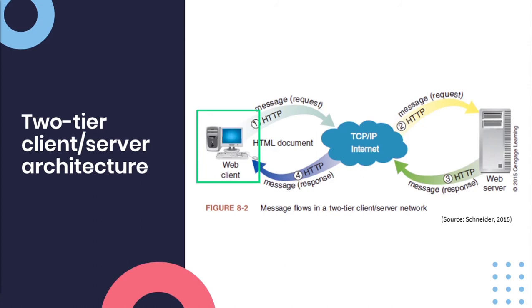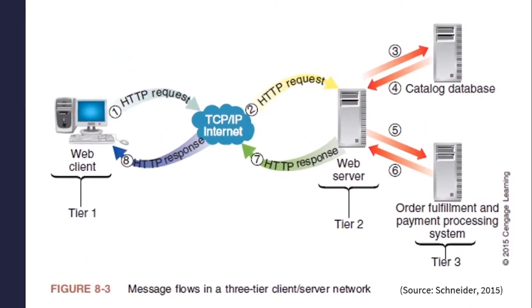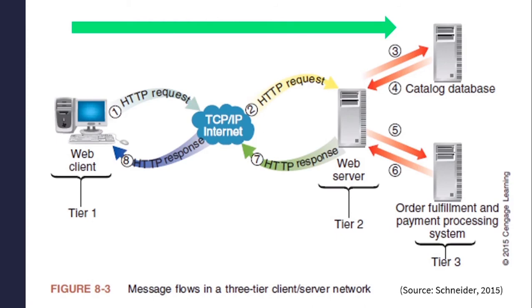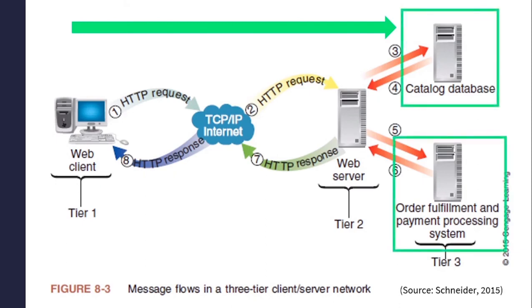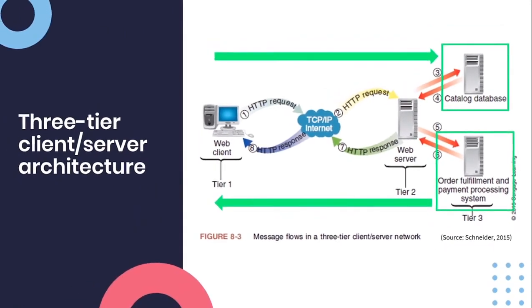Now let's have a look at the three-tier architecture. Pretty much the same thing happens — the web client makes a request over the internet to the web server. The only difference here is that there is a catalog database in our architecture as well as a payment processing system. Sometimes on your server you would have a database or some sort of system embedded, where you would want to fetch additional data, especially when it comes to databases. After all the data and scripts have been successfully requested, they get sent back to the client where they're rendered on the screen. Keep in mind, only the browser — only the client — can understand the code. We as human beings can't read the code and make sense of it overall, therefore we have clients.